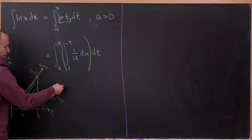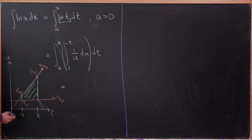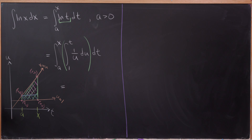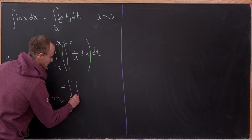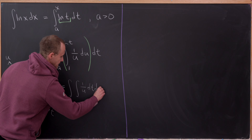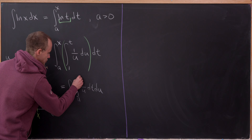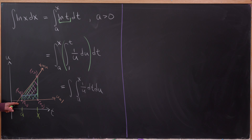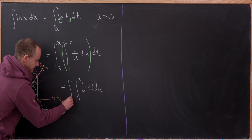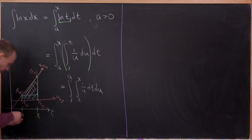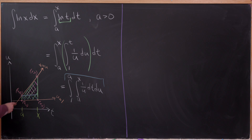Let's see how we can switch the order of integration. We're going to split this into two parts: a blue rectangular part, and a magenta triangular part. For the blue part, we'll have the integral of 1 over u dt du, where the t values go between a and x and the u values go from 1 to a. That's not tricky at all — it's just a rectangle.